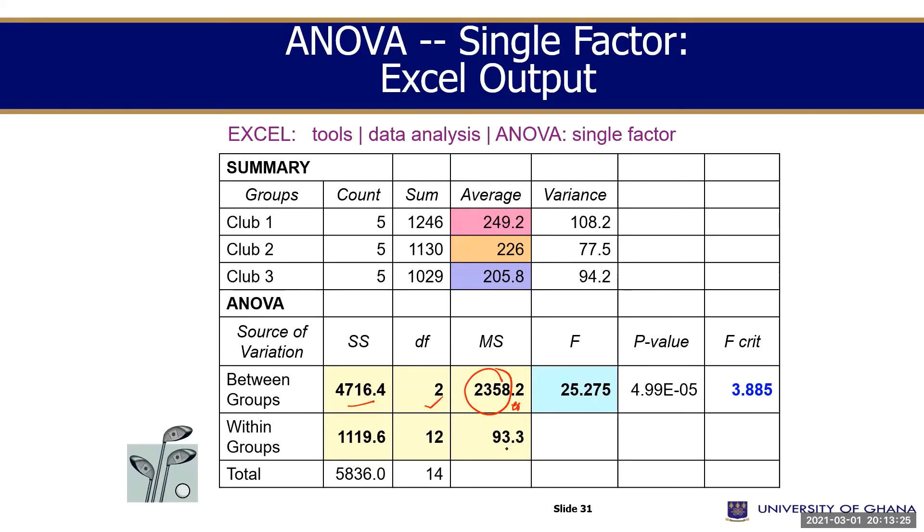Then MSW is also SSW value here divided by degrees of freedom denominator will give you this. Then my F computed, this divided by this will give you that. The p-value approach we did not read.